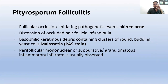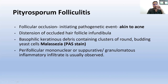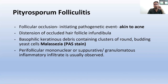Pityrosporum folliculitis often occurs in the context of acne on seborrheic areas, and the initiating event is like acne. There is distension of an occluded hair follicle infundibulum, leading to basophilic keratinous debris containing clusters of round budding yeast cells — Malassezia — whereas in acne you just have bacteria. Often, because of the inflammatory reaction against pityrosporum, you have a suppurative granulomatous inflammatory infiltrate, though sometimes in early cases it can be mononuclear.